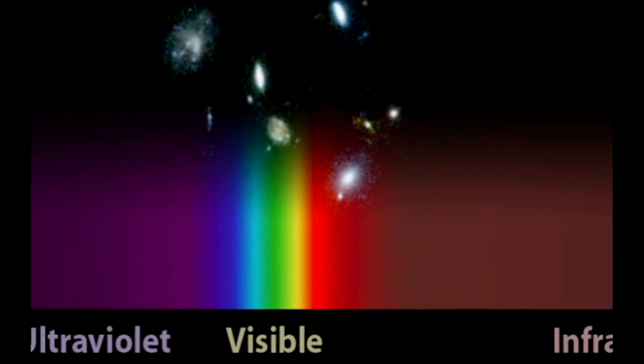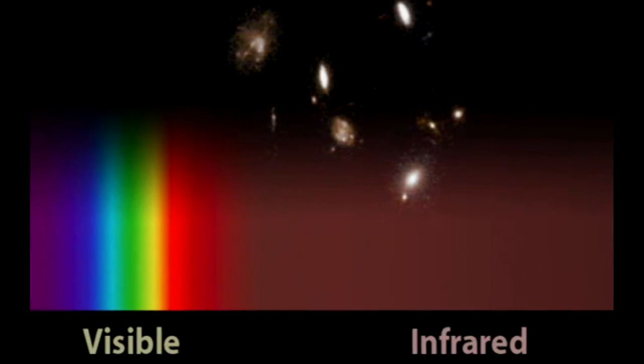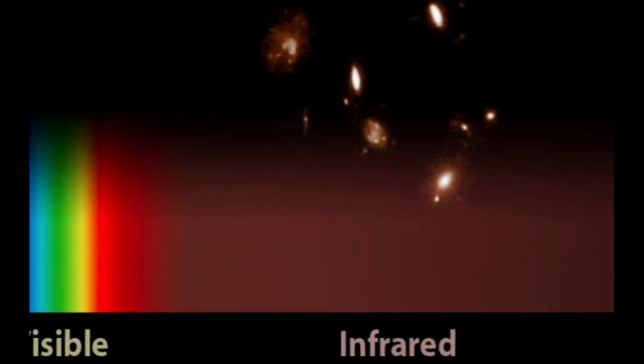Because this light has traveled for so long and so far across our expanding universe, it's not possible to observe it with visible light telescopes. The original ultraviolet and visible light photons have been redshifted to the infrared part of the spectrum that Spitzer was designed to study.